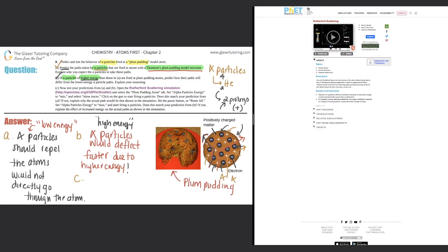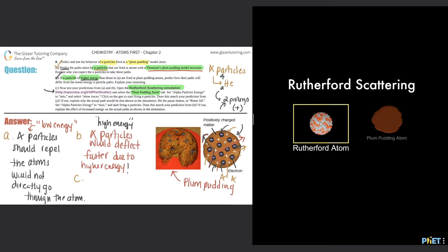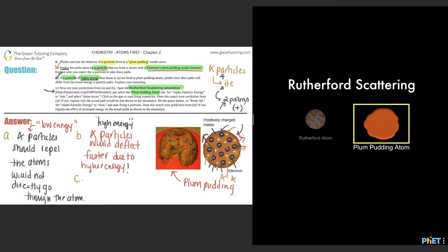Now for part c: test your predictions for a and b. Open the Rutherford scattering simulation — there's a link in the description you can click. You'll come up with the simulation page, and on the right-hand side click the playlist icon which brings you to the Rutherford scattering options. Select the plum pudding one — click the one on the right.